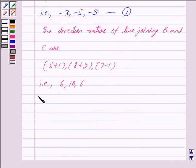Taking -2 common, we get or (-3, -5, -3). We mark this as equation 2.